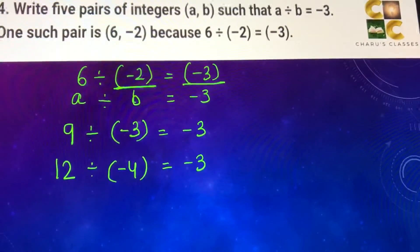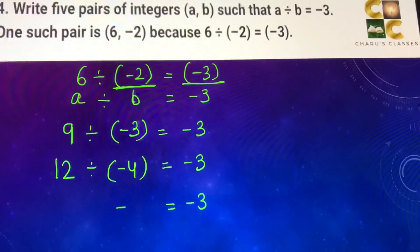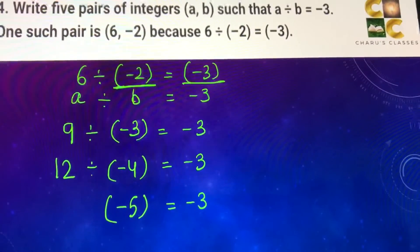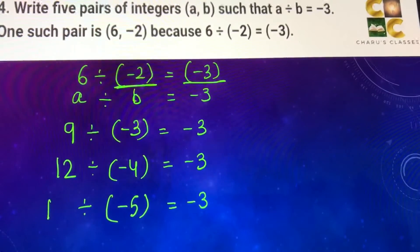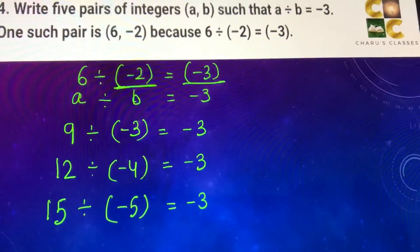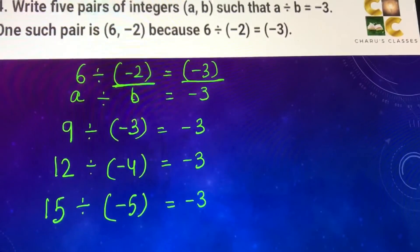So here we have minus 3 fixed and the other number we are changing. Minus 2, minus 3, minus 4. Now I can take minus 5. Minus 3 into minus 5 that is 15. So 15 divided by minus 5 is equal to minus 3.